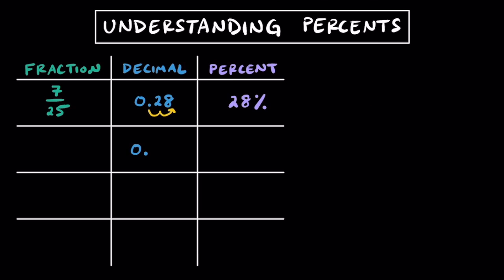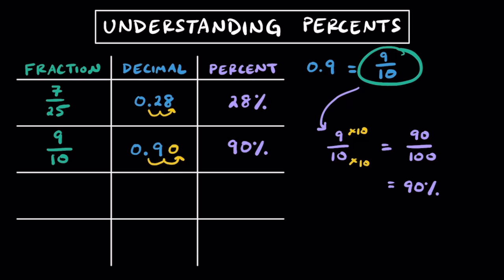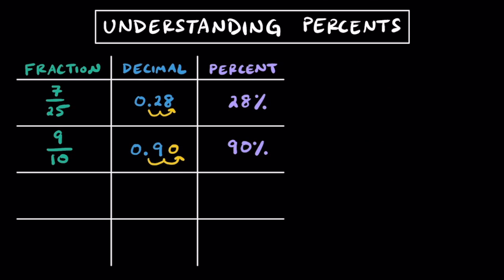Looking at this decimal of 0.9, reading it properly, it's going to be 9 tenths, and since it can't be simplified, we can just write it as a fraction. However, to get it as a percent, we need it to be per 100. Multiplying top and bottom by 10, we're going to get 90 per 100, which is 90%. Using the shortcut, we could have also just slid the decimal twice to the right and found out that's 90%.